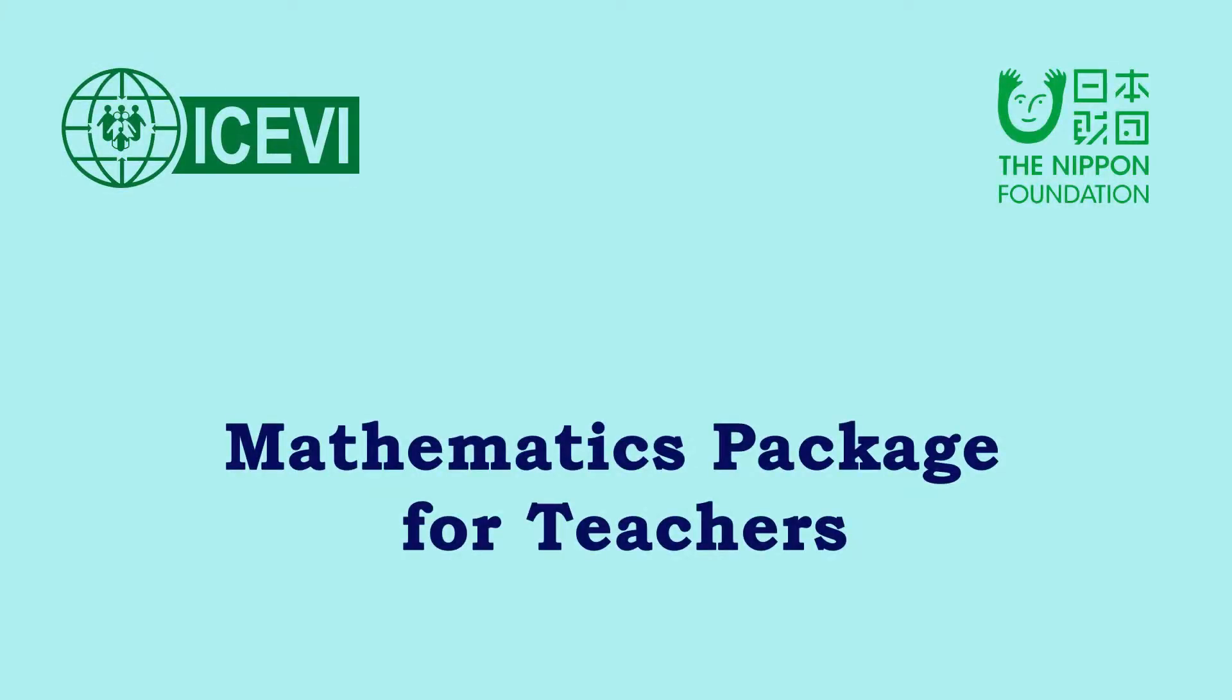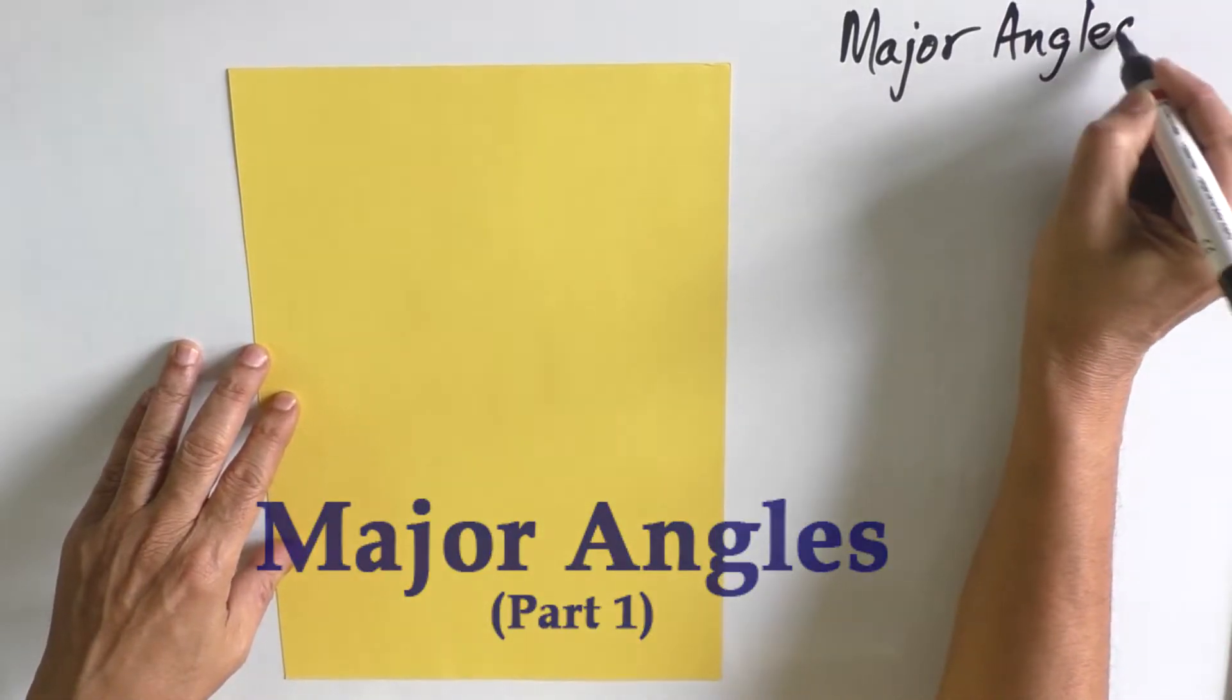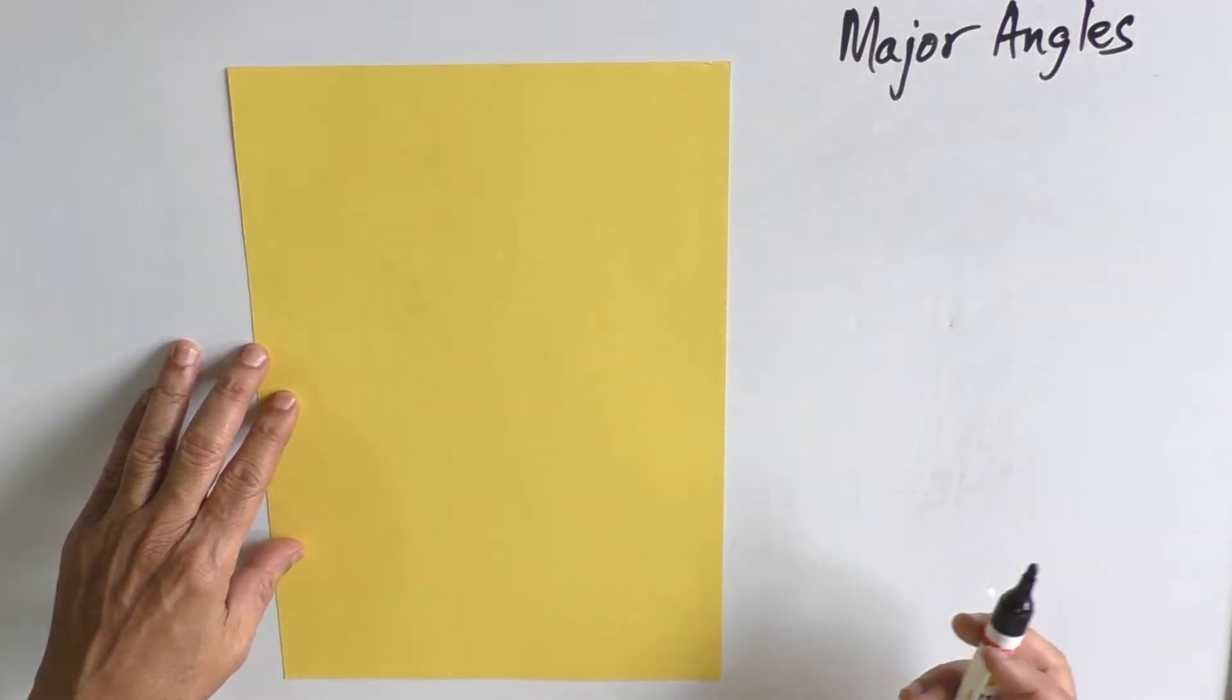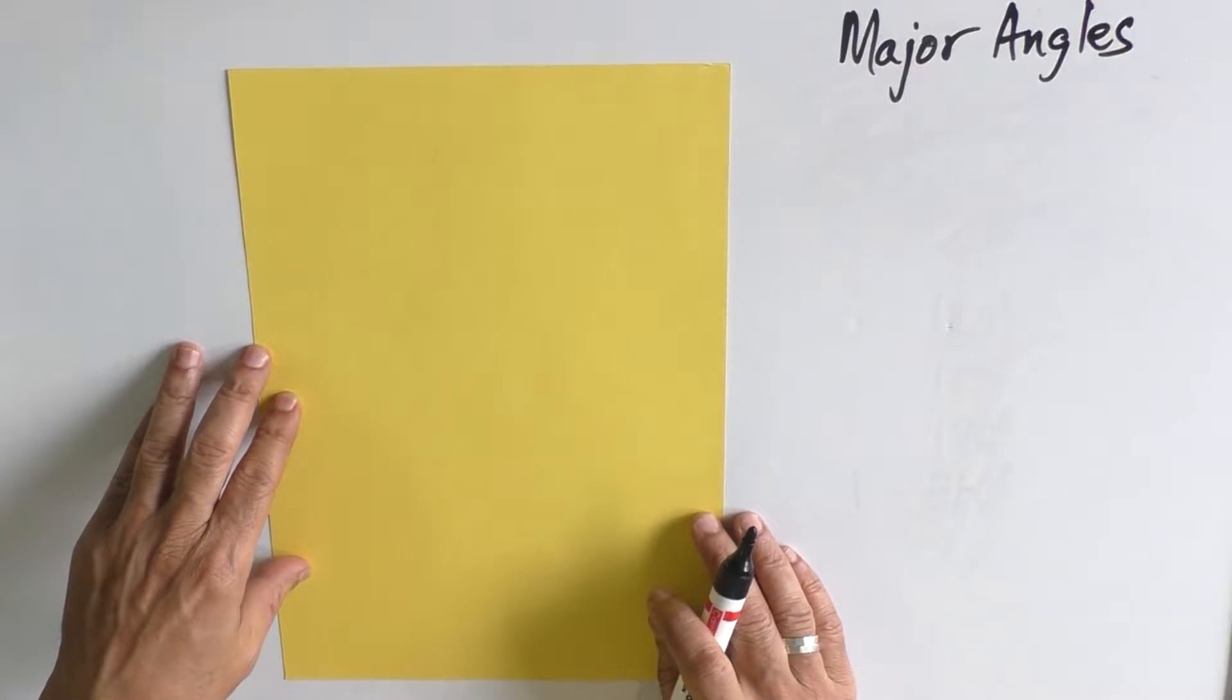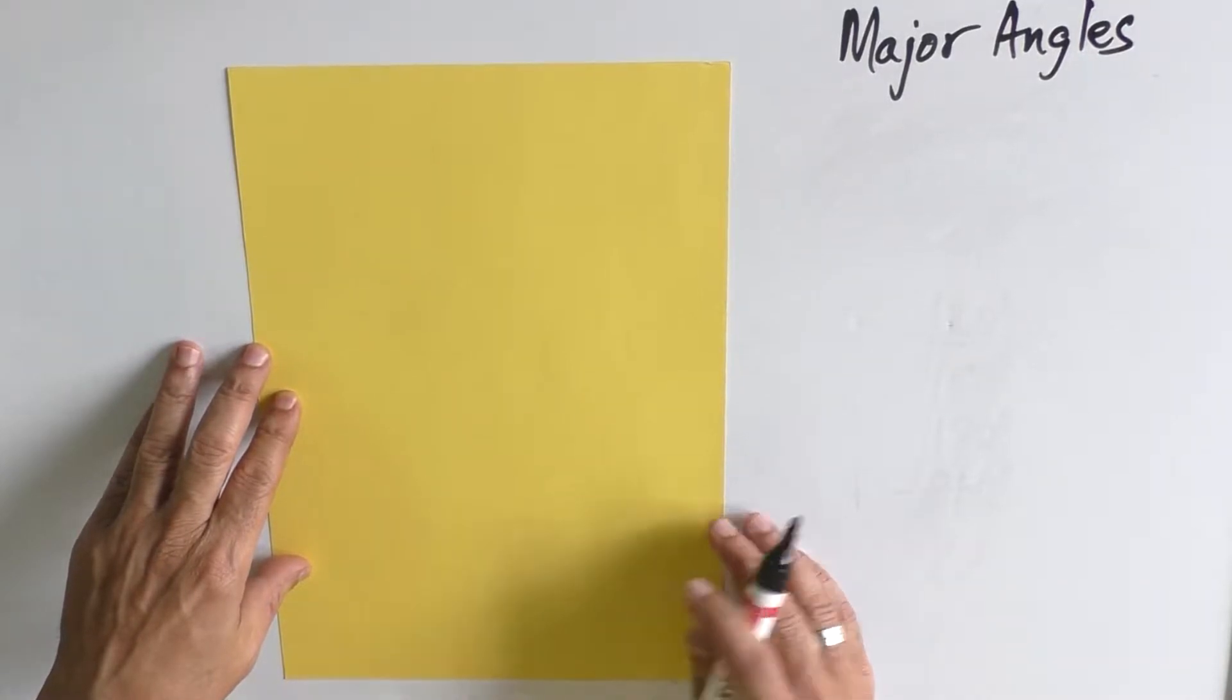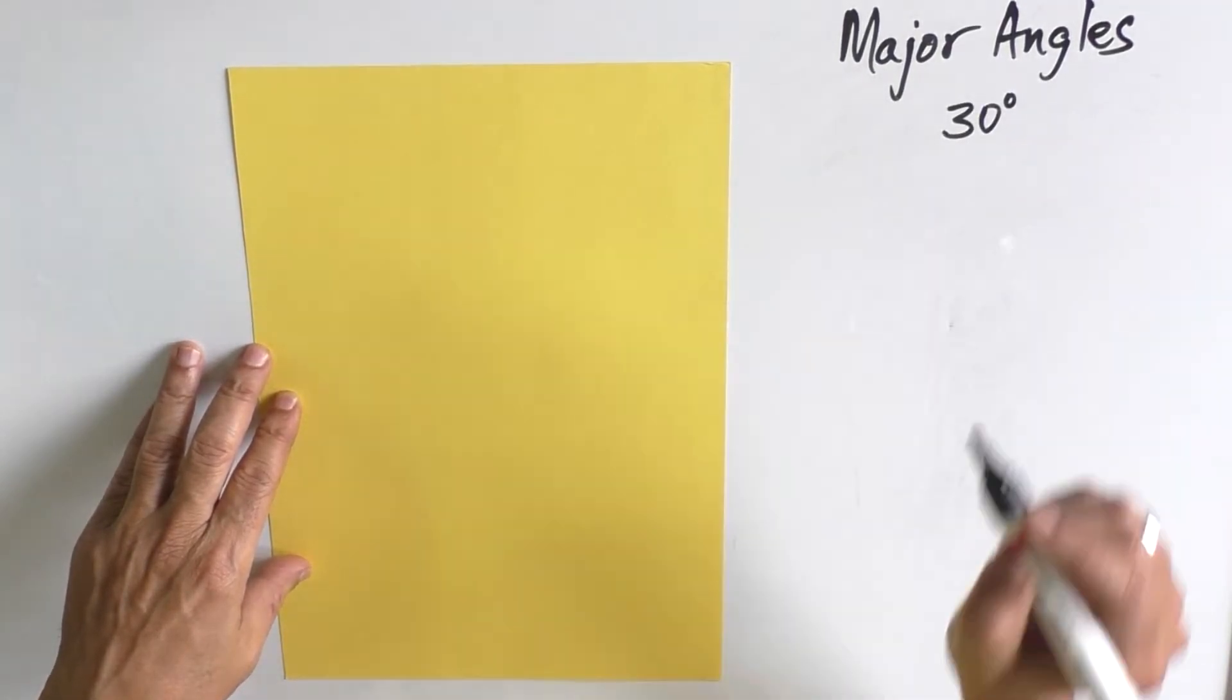The ICBI-Nippon Foundation Mathematics Package for Teachers. Title of the video: Major Angles Part 1. What do we mean by major angles? We have 0 to 360 degrees. Now, 30 degrees we call that a major angle.